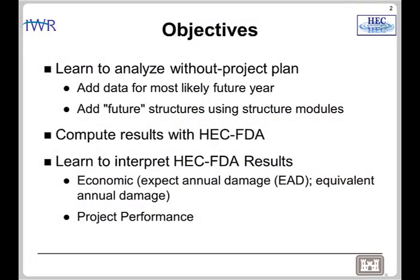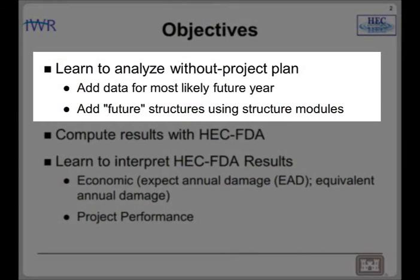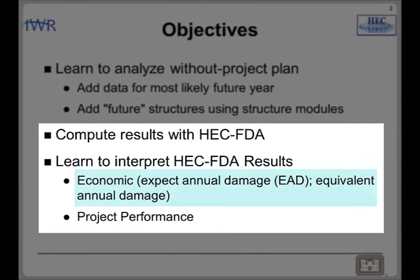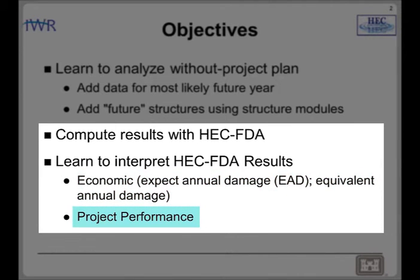Let's discuss Workshop 4. In this workshop, you will add future data to an existing ATC-FDA study. The existing study has already been configured for the Without Project base year, so you get to start off with a complete base year and just need to add all future conditions with the goal of interpreting the expected annual damage, or EAD, the equivalent annual damage, and the performance of the project results for the Without Project Plan for two analysis years — the base year and the most likely future year.